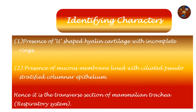Regarding the identifying characters: there is presence of a U-shaped hyaline cartilage with incomplete rings, and presence of a mucous membrane lined with ciliated pseudo-stratified columnar epithelium. Hence it is the transverse section of mammalian trachea, and as it helps in respiration it is under the respiratory system.